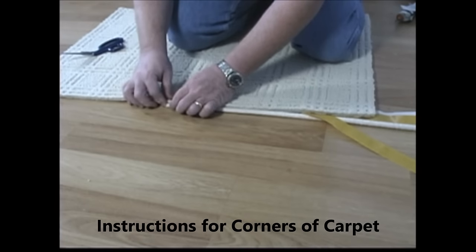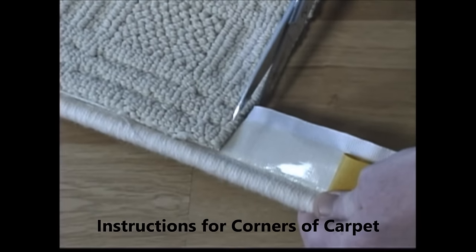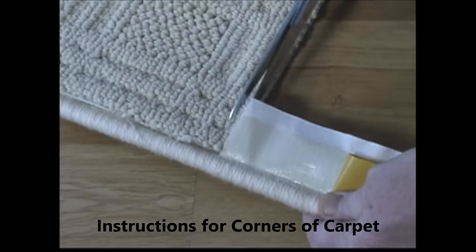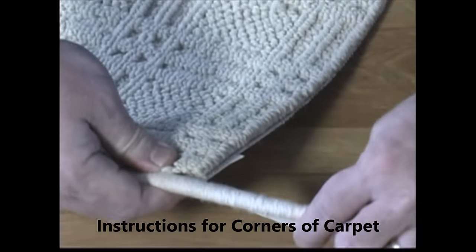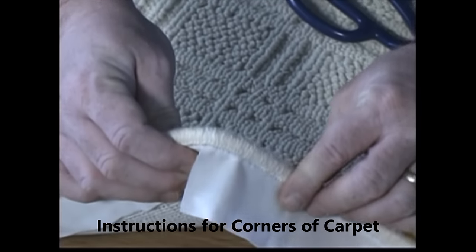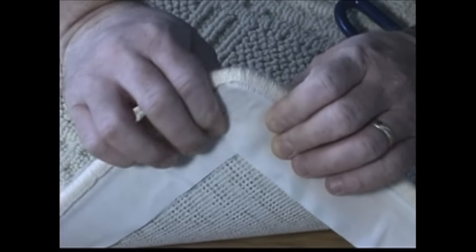Extend the Instabind past the corner of the carpet and using the edge as a guide, snip the flat part of the Instabind, stopping at the piping. With the paper turned back, overlap the backing while rounding the corner.